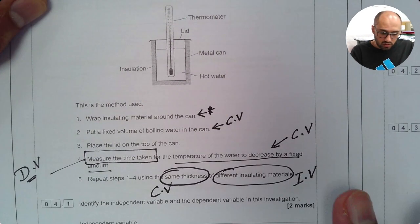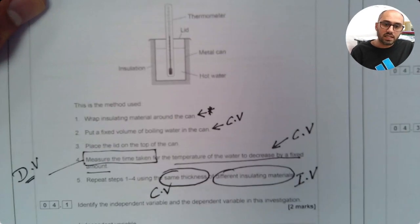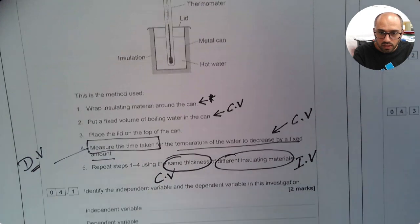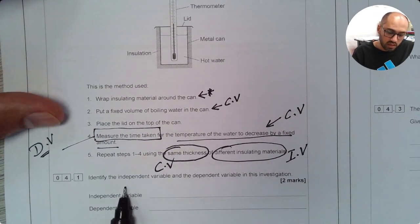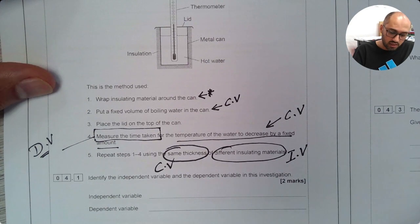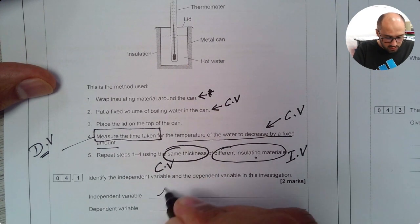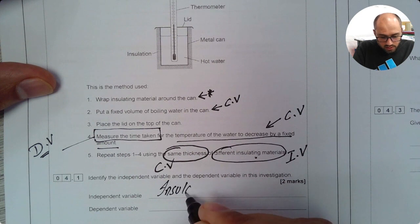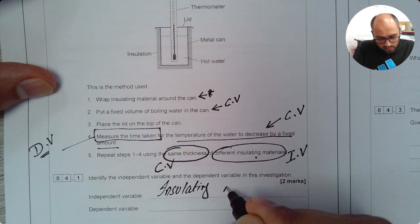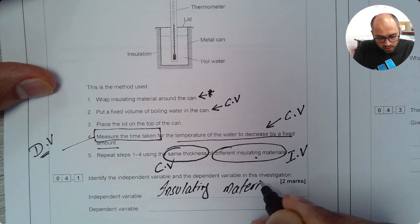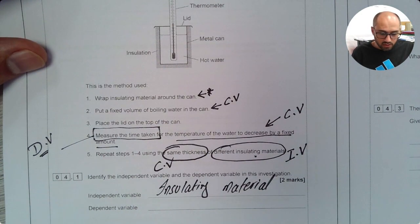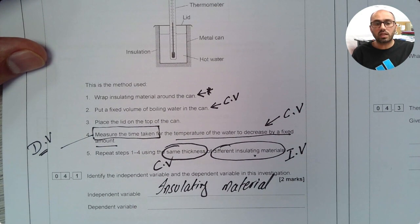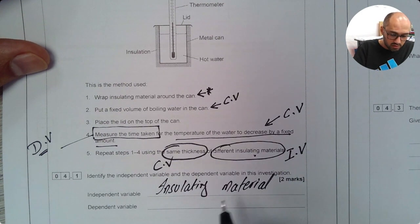Now on this investigation it says identify the independent variable and dependent variable in this investigation. So the independent variable in this case is insulating material. That's my independent variable because I'm going to change it. Second part is about dependent variable. Dependent variable is the one that we measure. So I'm going to say it is time.